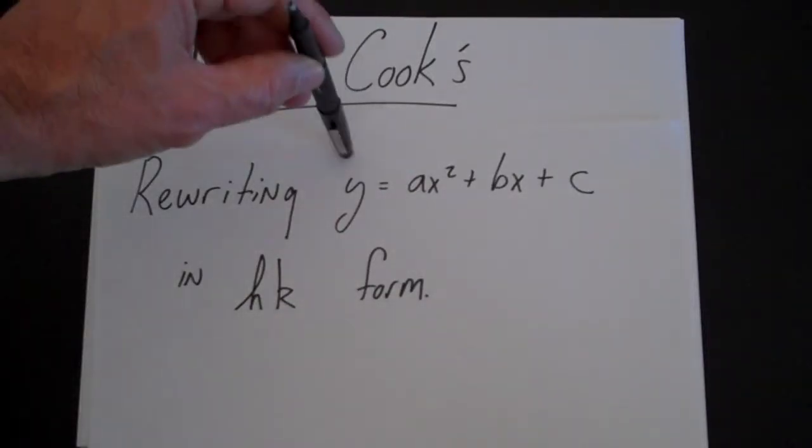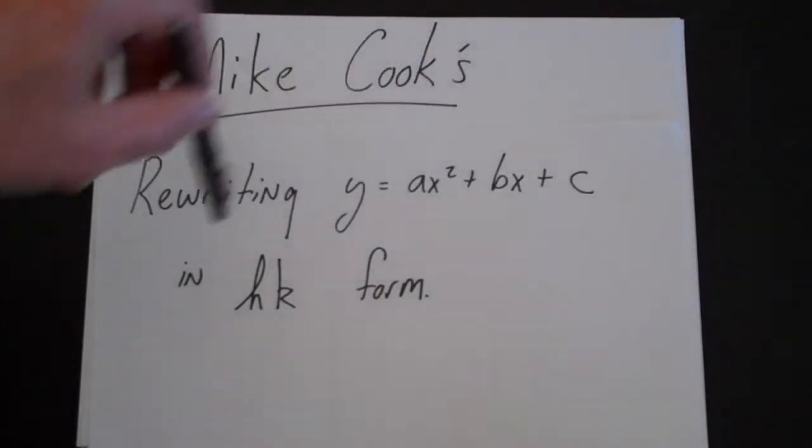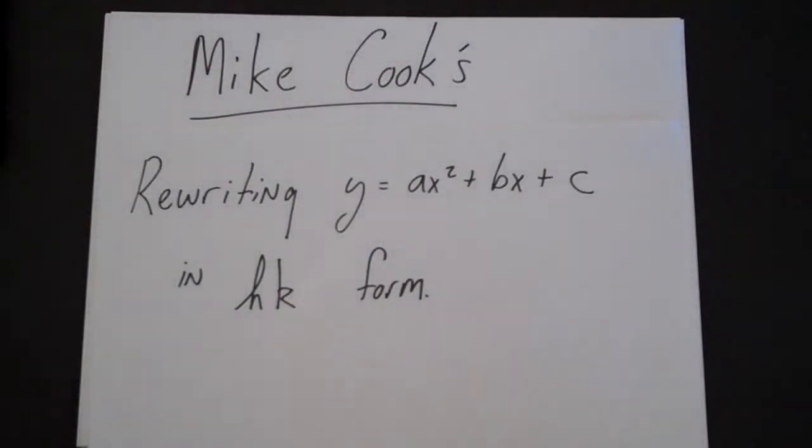Okay, now let's take a quadratic written in standard form, y equals ax squared plus bx plus c, and rewrite it in HK form.